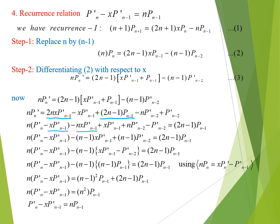The fourth recurrence relation is: P_n'(x) - x P_{n-1}'(x) = n P_{n-1}(x). To prove this, we use recurrence relation 1. Replacing n with n-1 throughout equation 1, we get: n P_n(x) = (2n-1) x P_{n-1}(x) minus (n-1) P_{n-2}(x), which becomes equation 2.